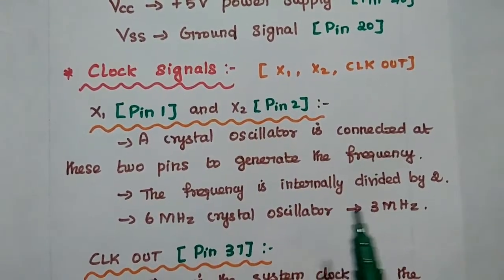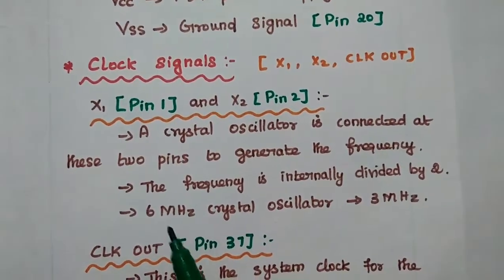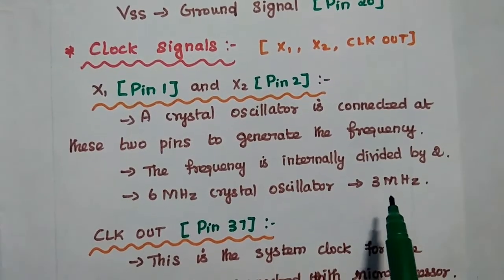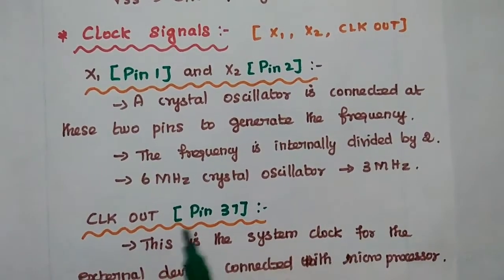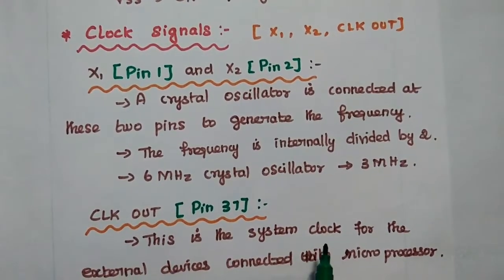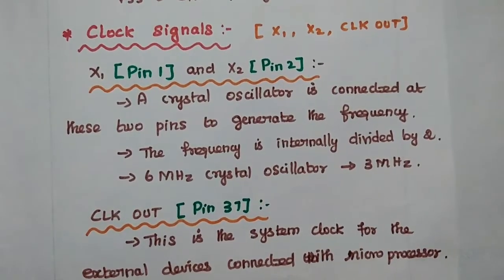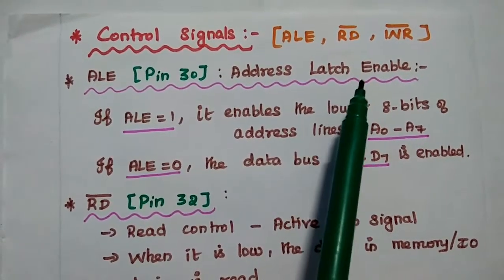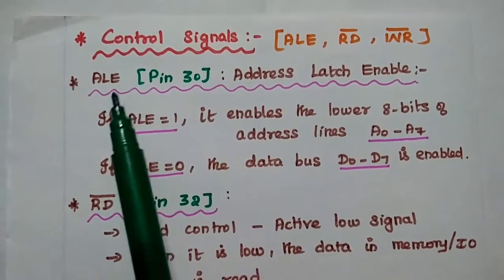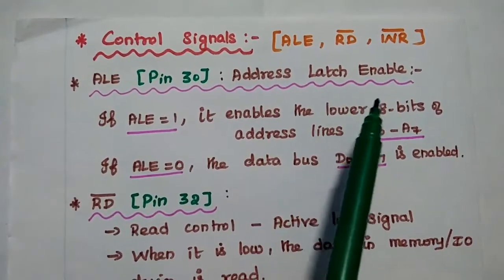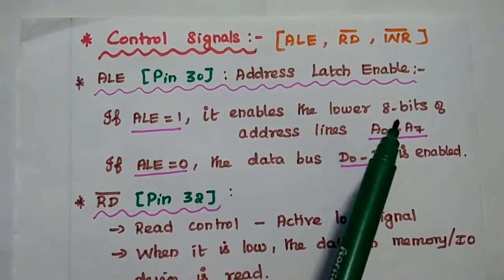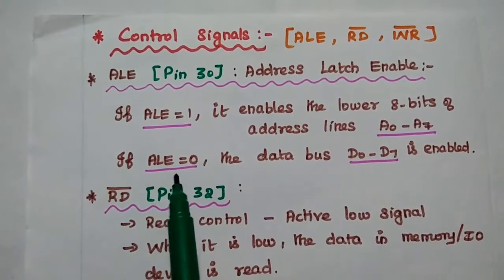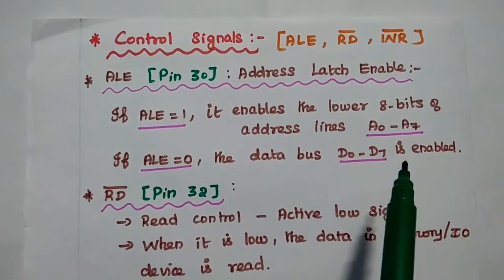The frequency is internally divided by 2 in the 8085 processor, so we connect a 6 MHz crystal oscillator between X1 and X2 because the clock frequency of 8085 is 3 MHz. The Clock Out signal provides the system clock for external devices connected with the microprocessor. Regarding control signals, there are three: ALE, Read bar, and Write bar. ALE is the address latch enable signal. If ALE equals 1, it enables the lower 8 bits of address lines from the multiplexed address and data lines. If ALE equals 0, the data bus is activated.